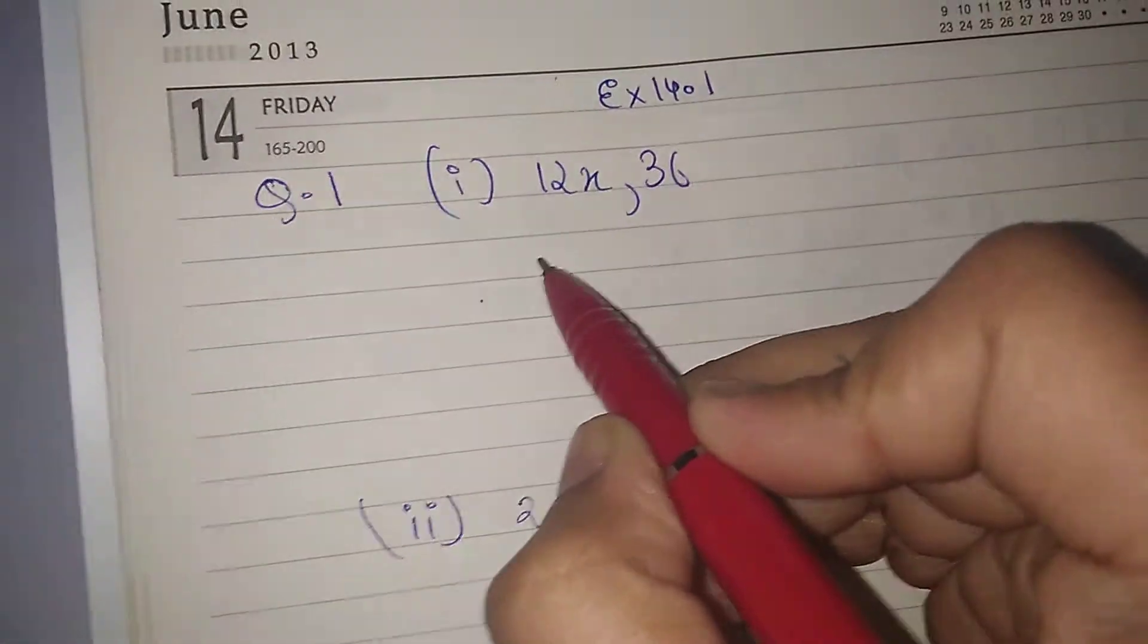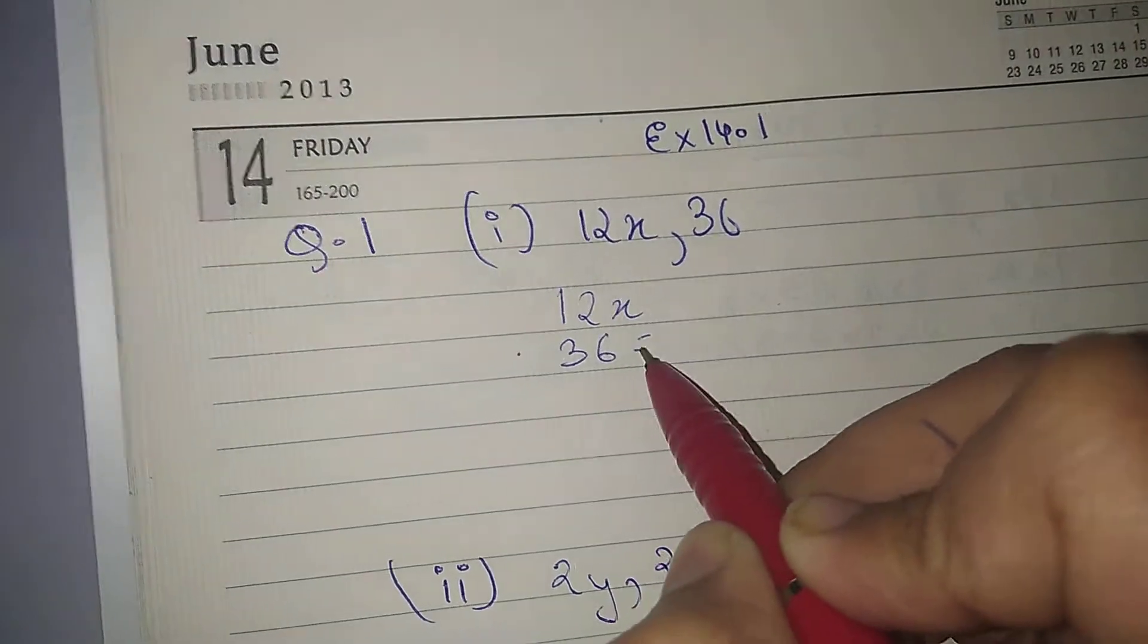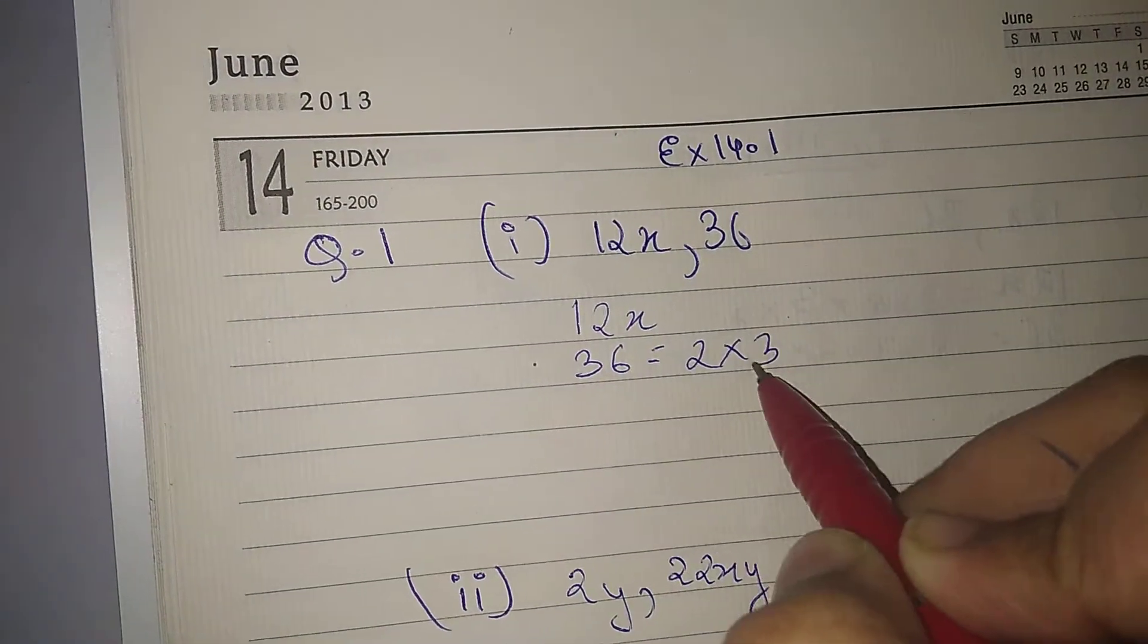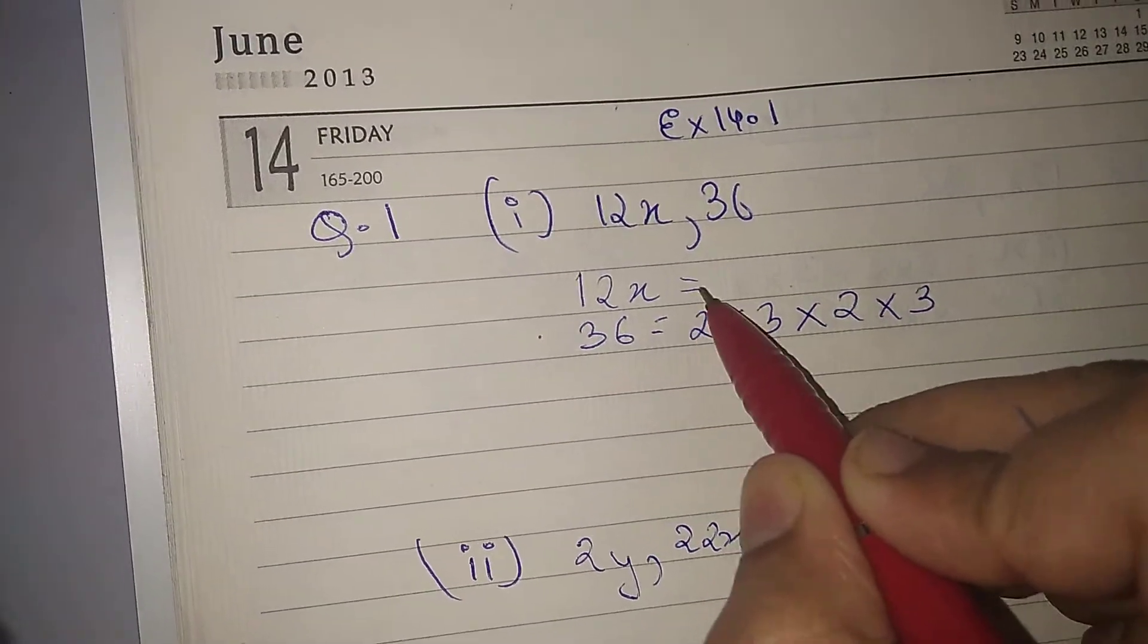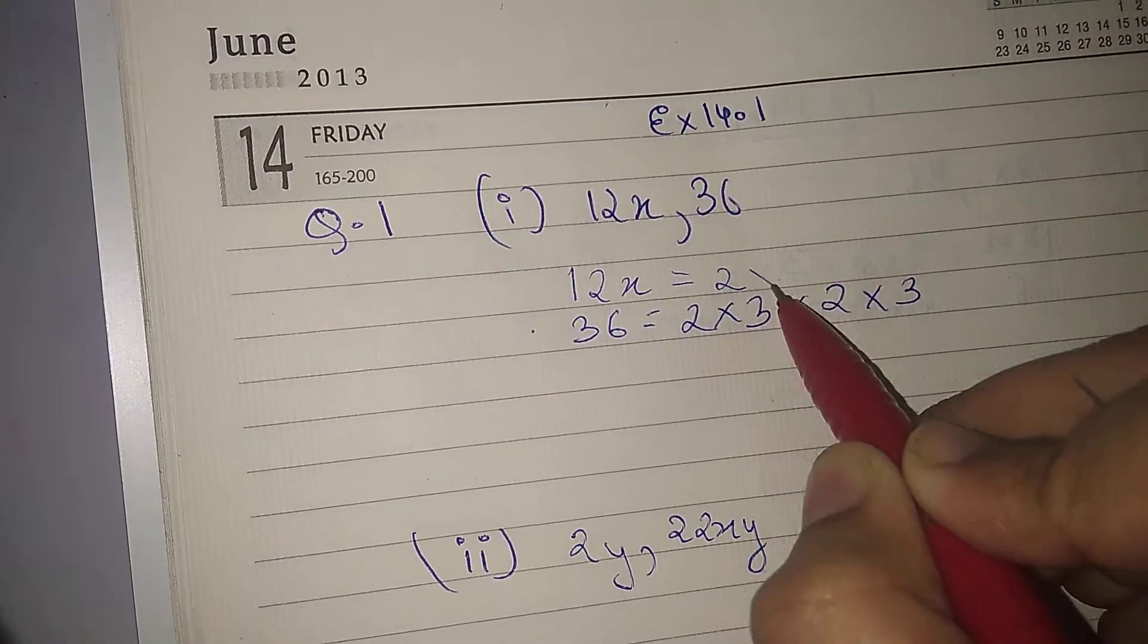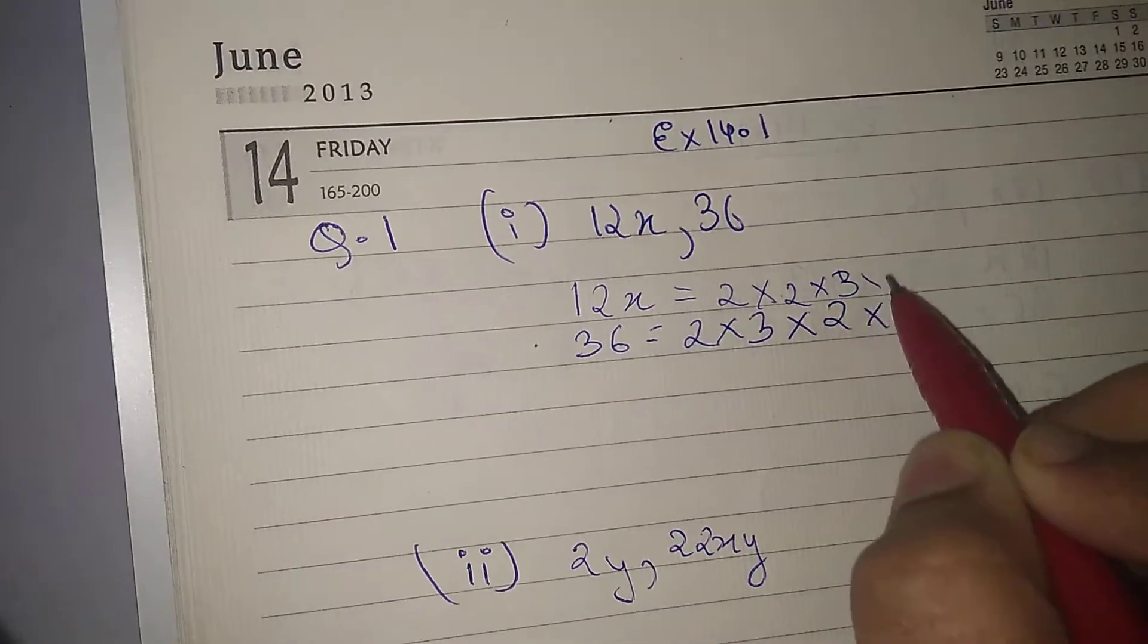The common factors in the given terms - we will write as 12x and 36 equals to 2 into 3 into 2 into 3, and for 12x we are going to write 2 into 2 into 3 into x.